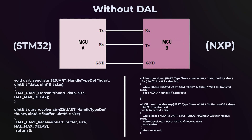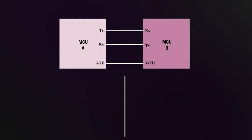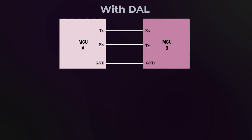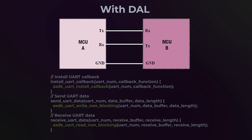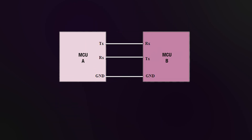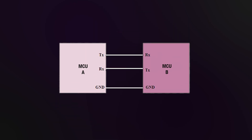Their registers and control mechanisms might be completely different. Without the DAL layer, you'd have to rewrite the application code for each microcontroller. But with the DAL, you can use the same functions like ASDK_UART_INIT or ASDK_UART_WRITE_NON_BLOCKING, and the DAL will translate these calls into the appropriate hardware-specific instructions for each microcontroller.